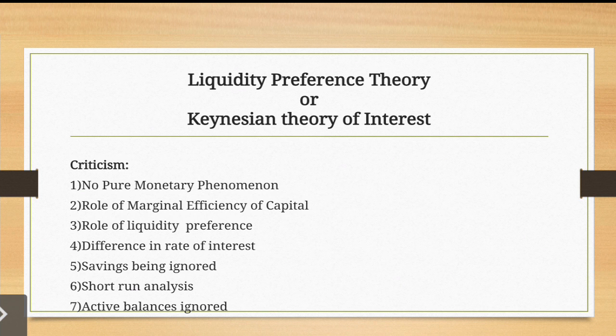This discussion on determination of rate of interest by Lord Keynes is a short-run analysis. It explains the rate of interest only in the short run. It does not discuss the determination of the rate of interest in the long run — which is also a criticism of this theory.